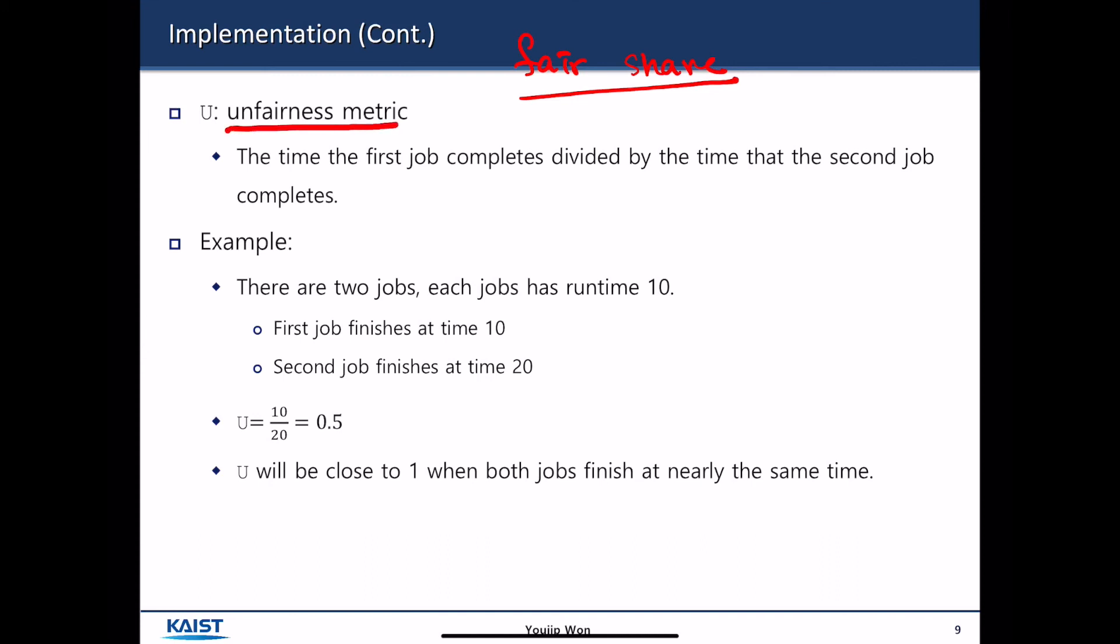For example, there are two jobs and each job has run time of 10. If the two jobs always get the equal share of the CPU scheduling algorithm, for example, A and B are executed in alternative fashion completely: A, B, A, B, A, B, and A, B. And then if they keep executing, then A and B will finish approximately at the same time, around time 20.